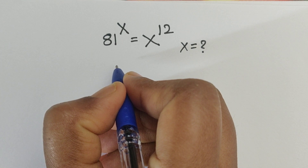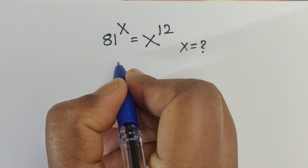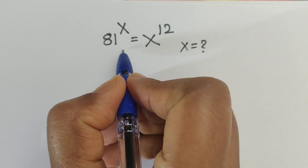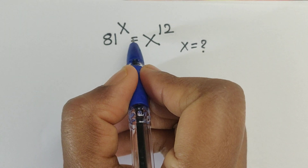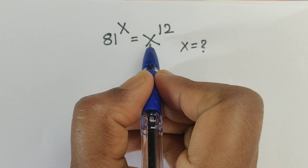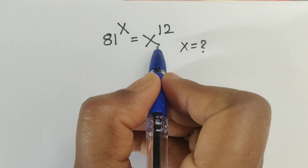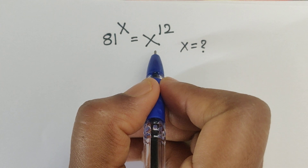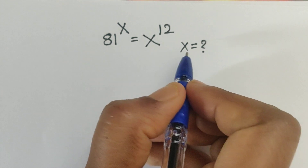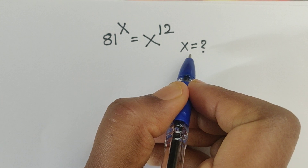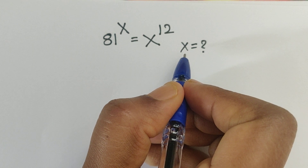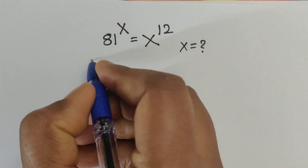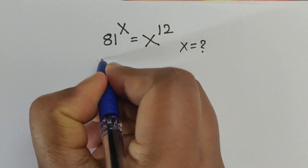Hello everyone, welcome back to our channel. Here we have one question: 81 to the power of x equals x to the power of 12. In this problem we have to find the value of x. Let's see the solution.